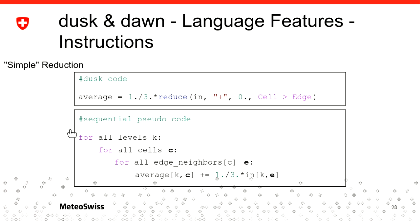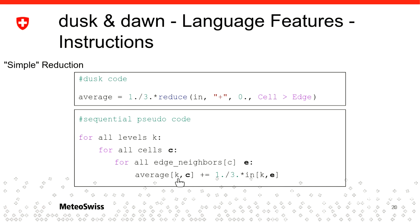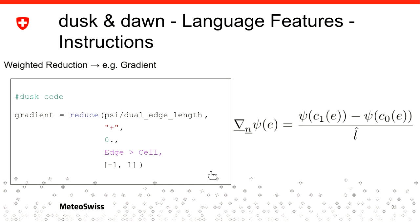If you want to understand it as sequential code, this corresponds to iterating through all k levels, then within one k level iterating through all cells, and for each cell looking at the three edge neighbors on a triangular mesh. In pseudocode, you access your field at edge e — where e is the index over the sparse iteration — and your average field. When you want to write, you access your average field at cell c, which is part of the dense iteration.